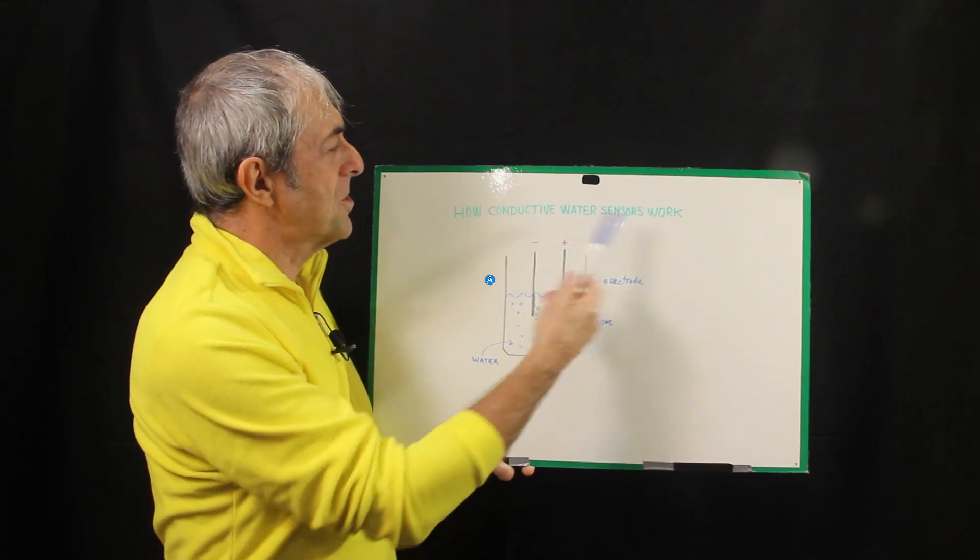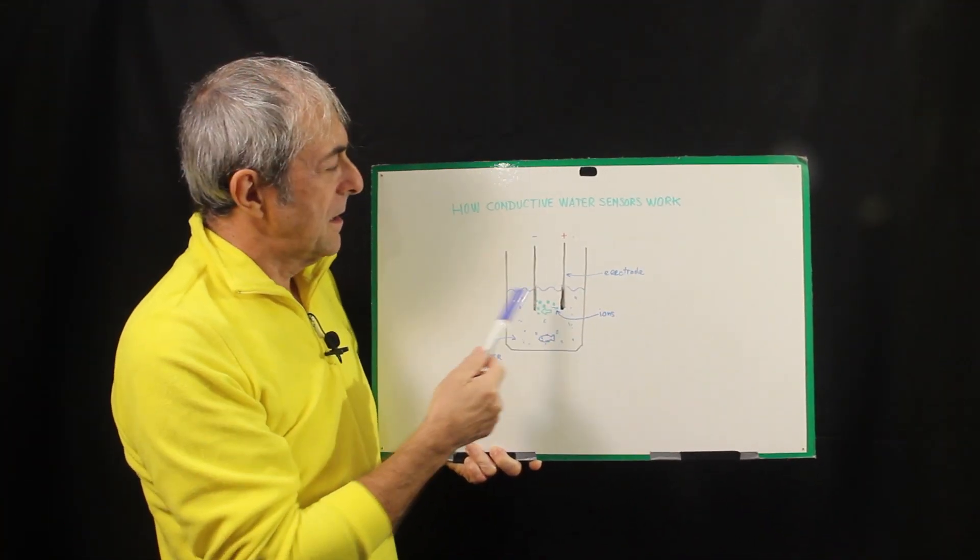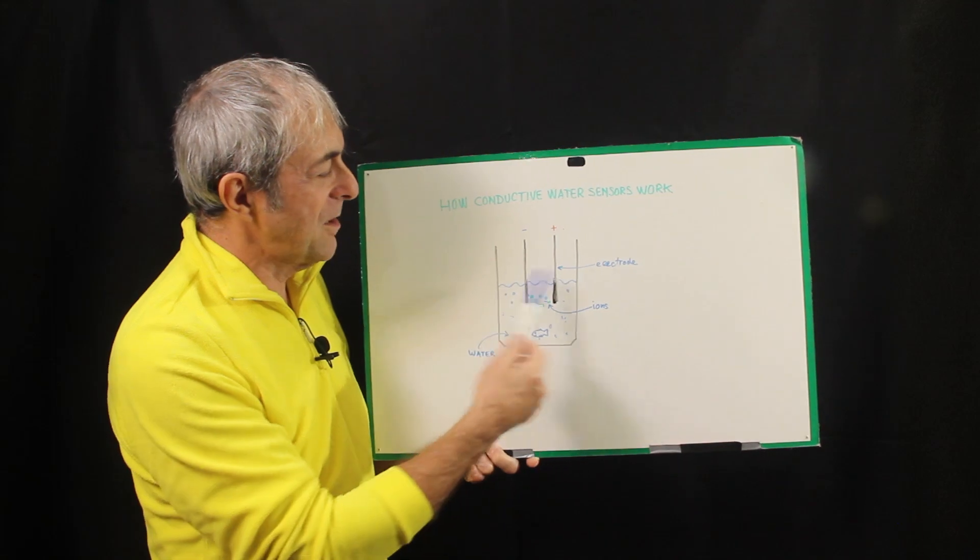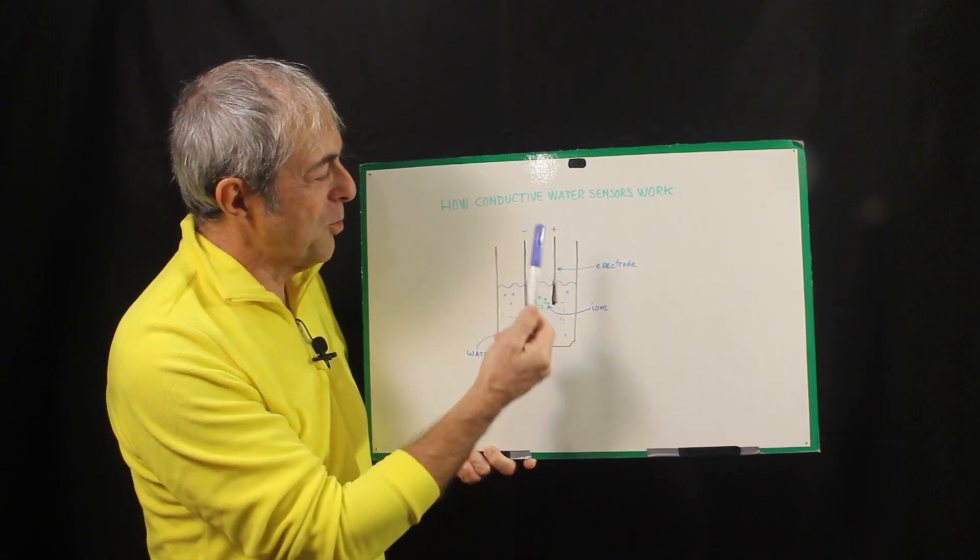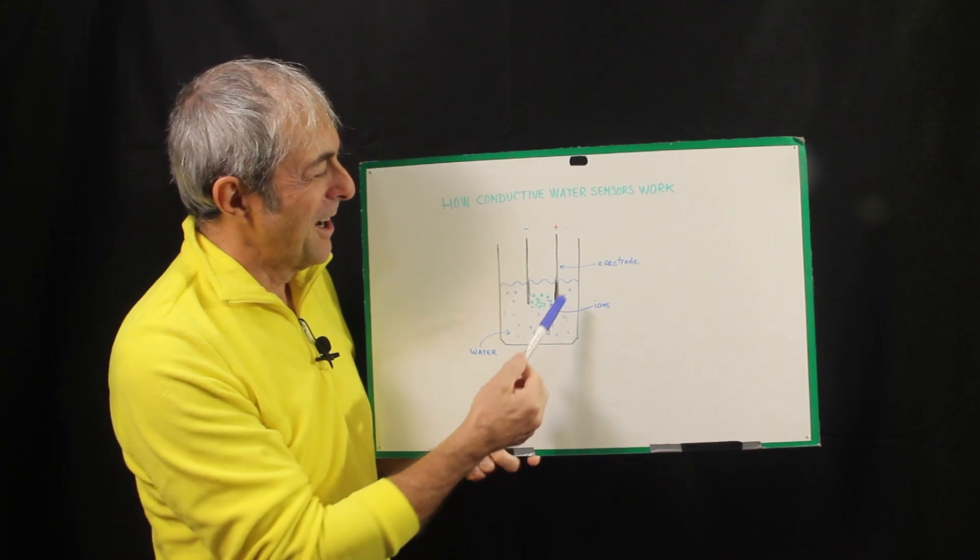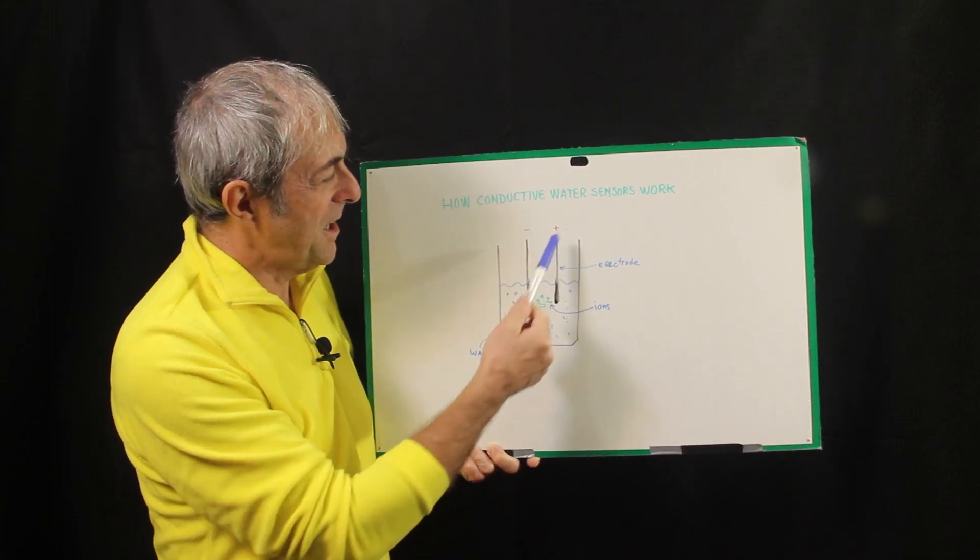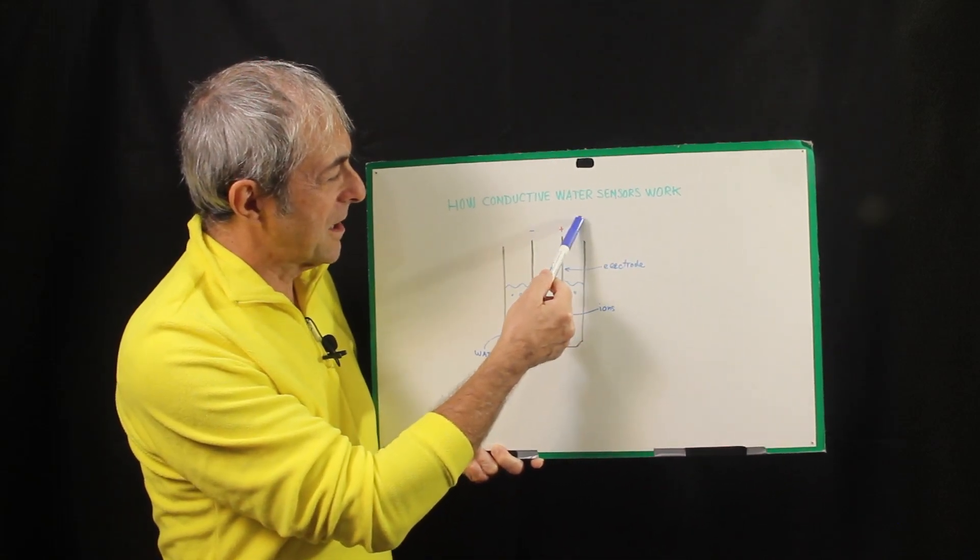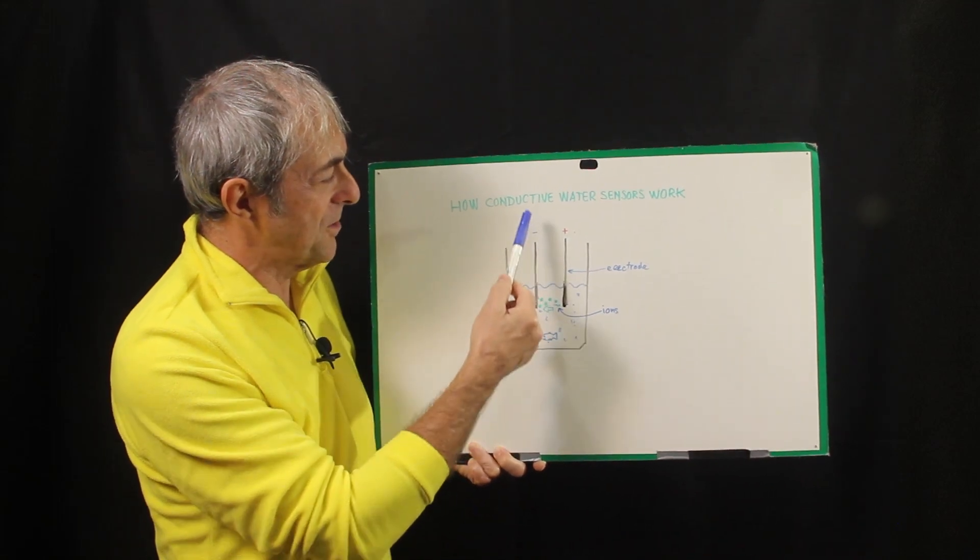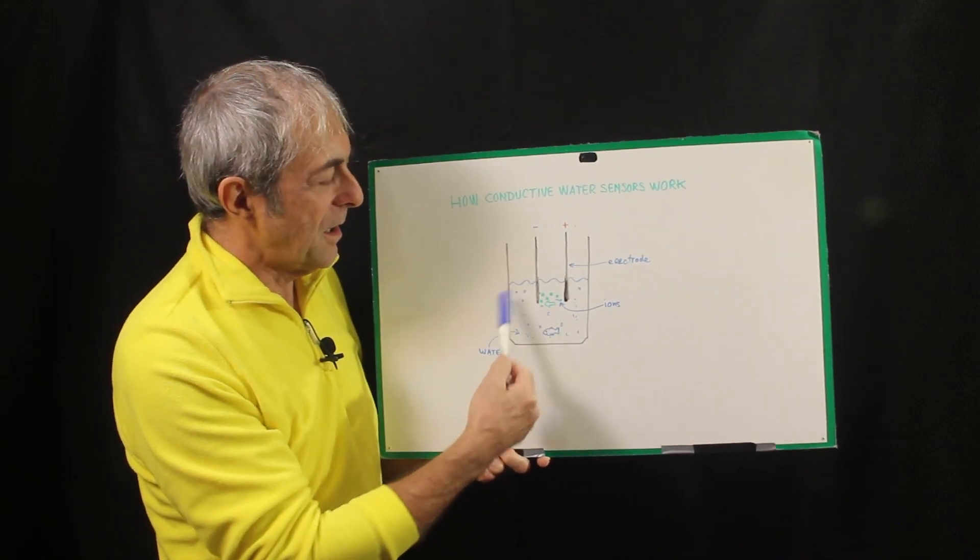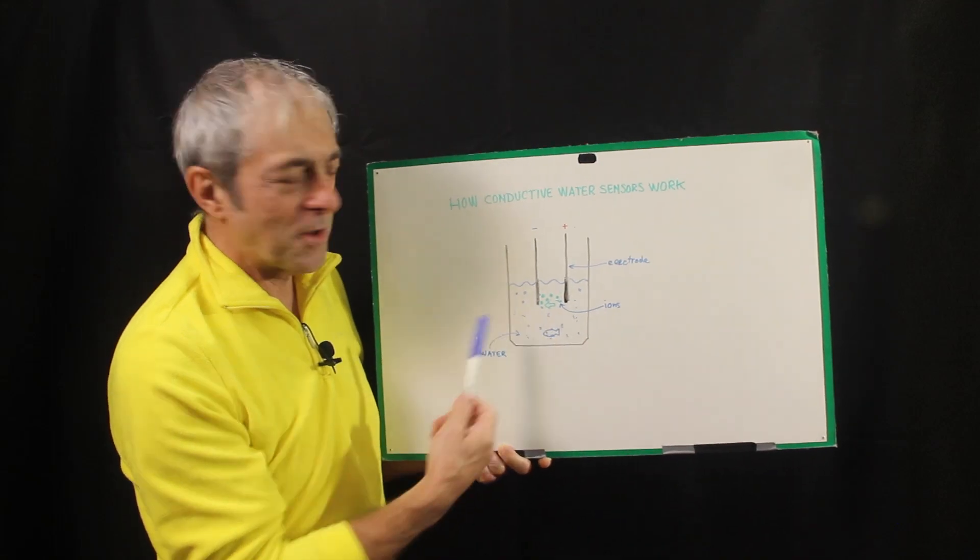But before getting started, let me tell you why I'm not a fan of conductive water sensors. Now this is how conductive water sensors work. Here we have a vessel, water, maybe fish, and two or more electrodes. A current would flow through the electrode and back to the other electrode going through the medium, in this case water.